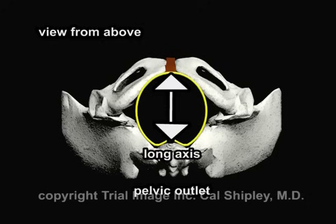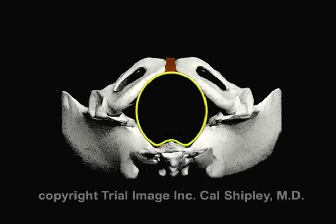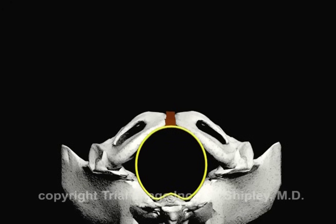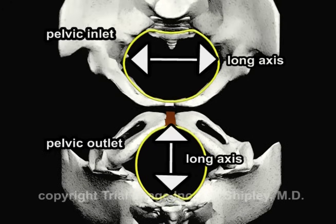Changing our view to the bottom of the pelvis, we can see that the situation for the pelvic outlet is the opposite of that of the inlet. The long axis goes from the front to the back — the pelvic outlet is deeper than it is wide. The orientation of the long axis of the pelvic inlet and pelvic outlet will come into play when we examine the cardinal movements later in the presentation.